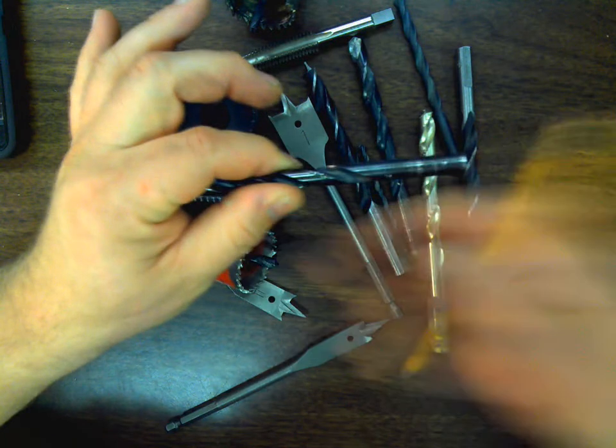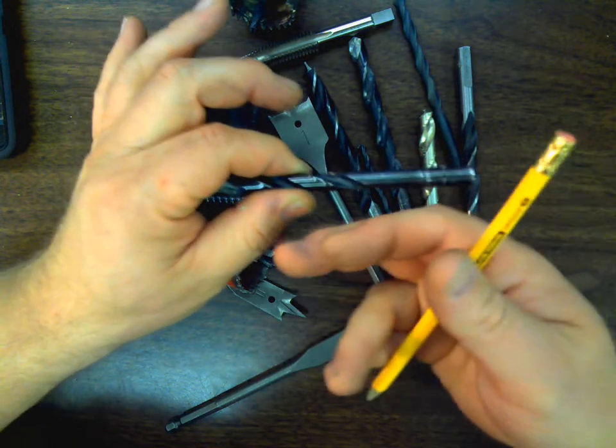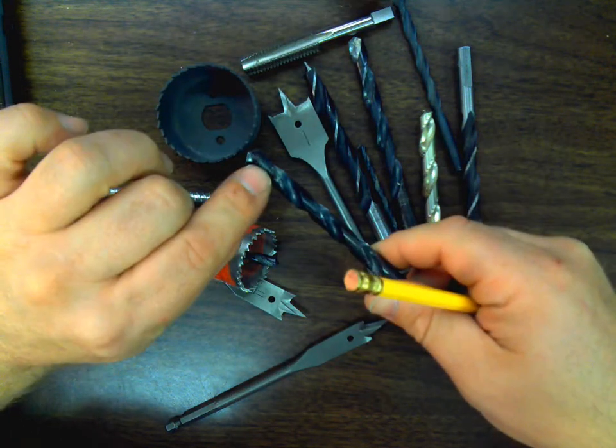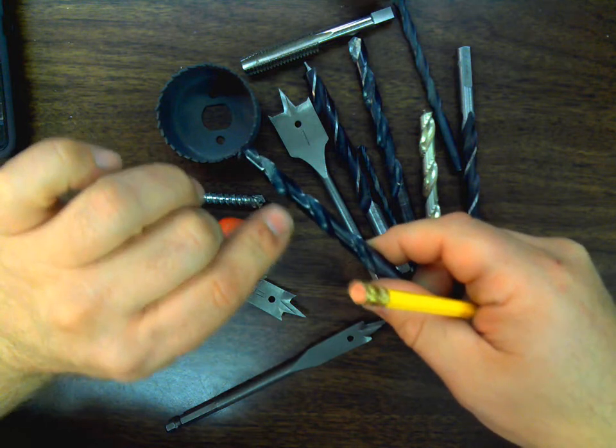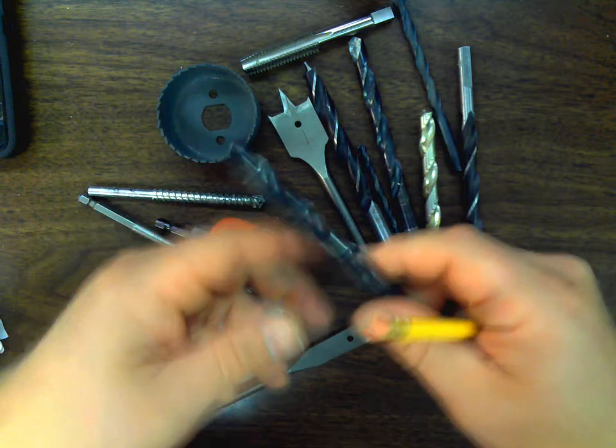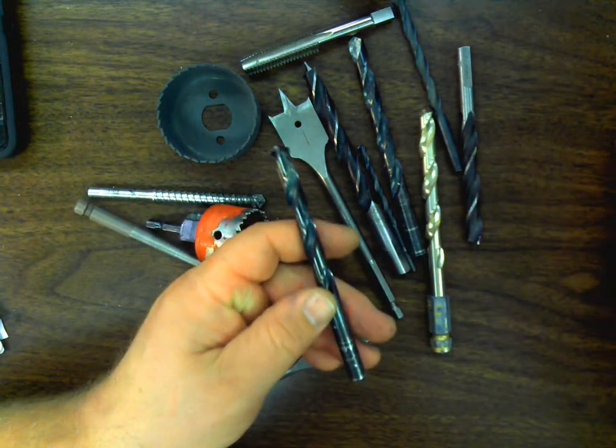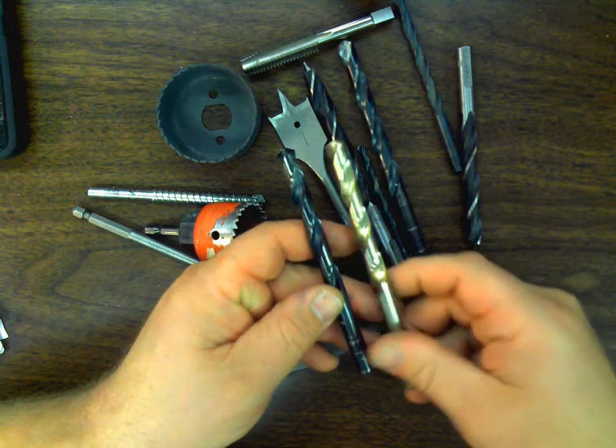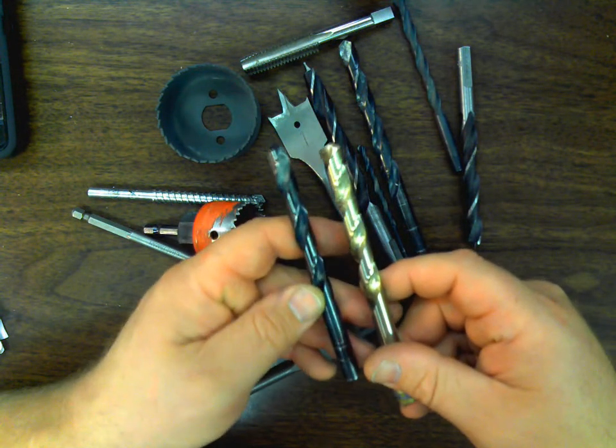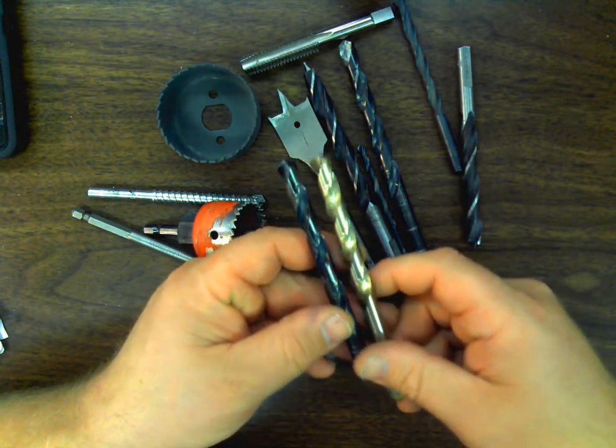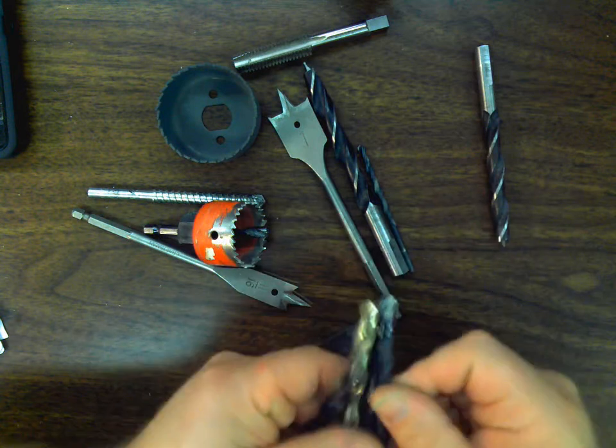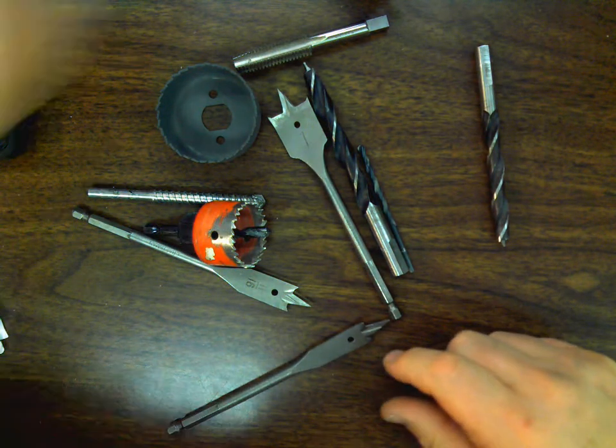The next one that we have that I want to talk about is called a brad point drill bit. This is really useful in woodworking, and actually wood is the only one that we're going to use a brad point on. It comes to that real sharp point, and the purpose of that is so that when we've got our boards, we can line that point right up and it makes it real easy for us to find the center on our board when we're drilling holes in wood. The downside of this drill bit is that that point isn't very strong. So we can't use this for other materials like metal. If you tried to drill a hole in metal with this, you're just going to either burn that tip off or break it off and that's no good.